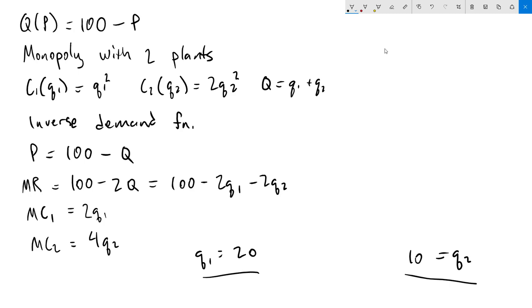Next, we're going to find the price. To do that, we'll first note that our total output, capital Q, is 20 + 10 = 30. We can plug that right back into our inverse demand function to get the price P = 100 - 30 = 70.